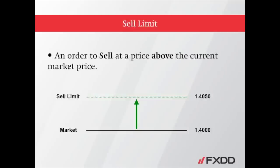A sell limit order is a pending order you place when you wish to sell at a price above the current market price. As an example, if the EURUSD is currently trading at 1.40 bid and you wish to sell only if it rises to 1.4050, you may consider setting a sell limit order at 1.4050. This would imply that you're speculating that the market will reverse downward after the order is triggered.